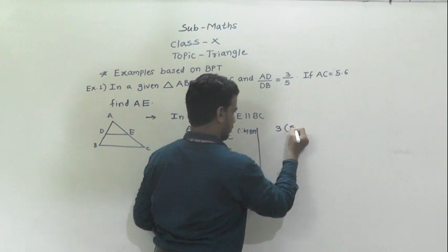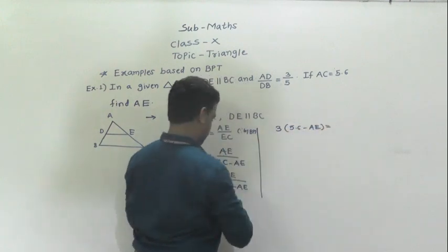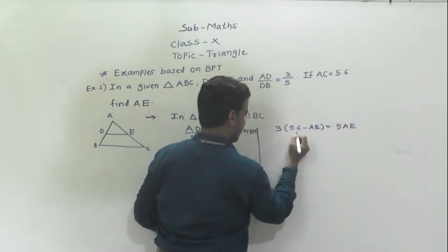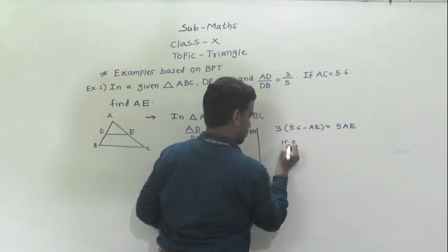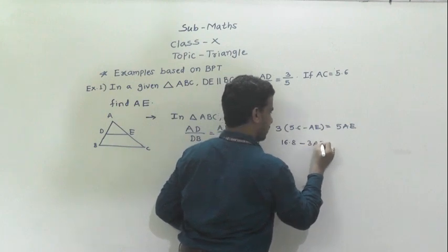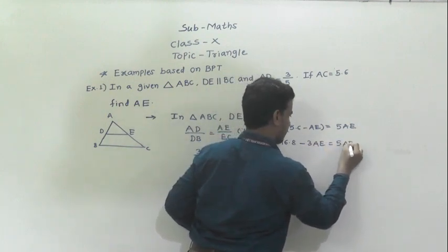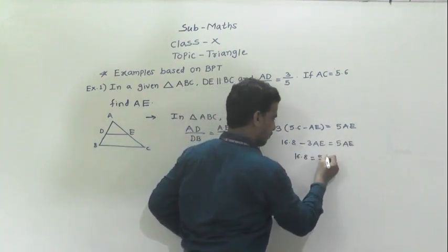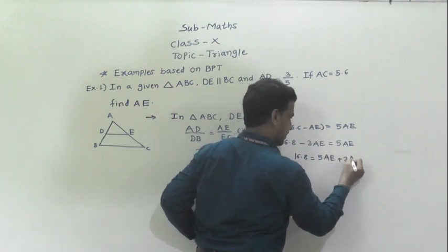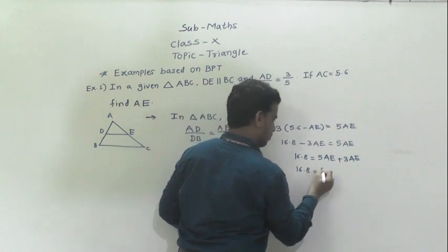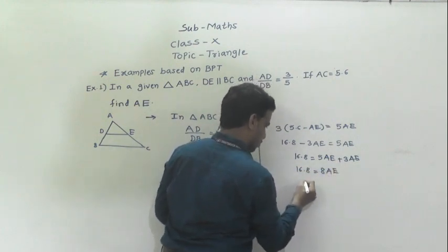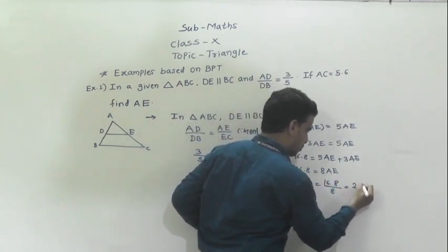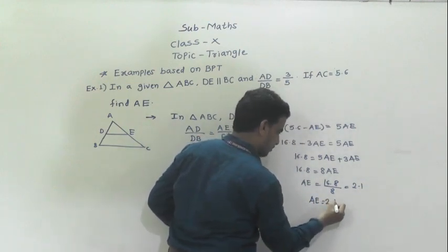So 3 into (5.6 minus AE) is equal to 5 AE. So 3 into 5.6 is 16.8, giving us 16.8 minus 3 AE is equal to 5 AE. Shifting minus 3 AE to the other side: 16.8 is equal to 5 AE plus 3 AE, so 16.8 is equal to 8 AE. Therefore AE is equal to 16.8 divided by 8, that is 2.1. So AE is equal to 2.1 cm.